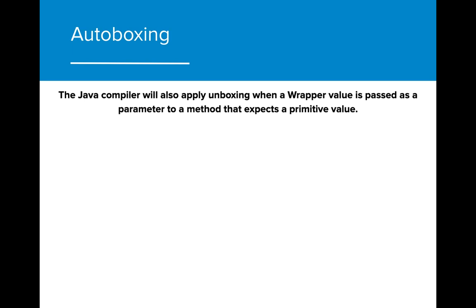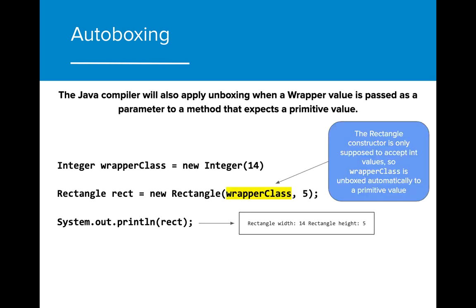The Java compiler will also apply unboxing when a wrapper value is passed as a parameter to a method that expects a primitive value. In this example, the rectangle constructor is only supposed to accept int values as actual parameters. The wrapper class Integer is unboxed when input to the rectangle constructor into a primitive value type, which is then stored as the width value in the rectangle.